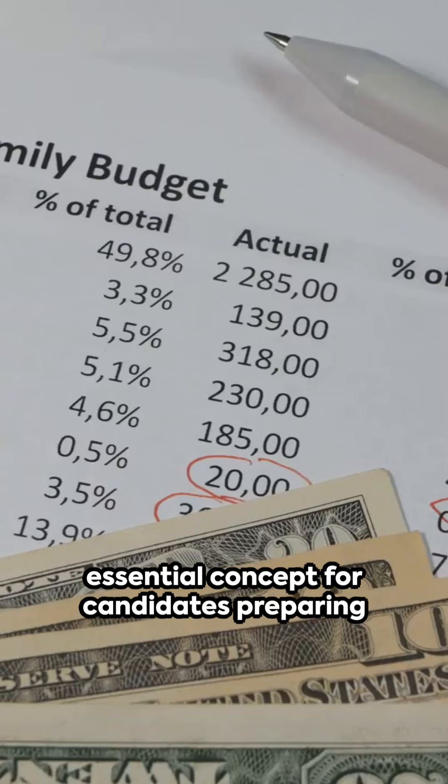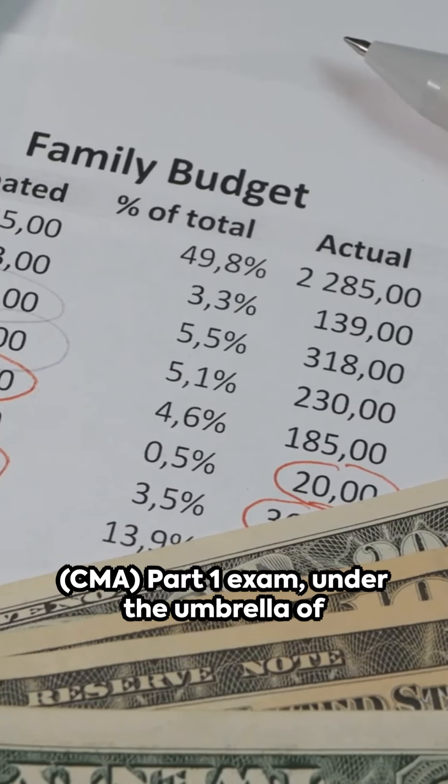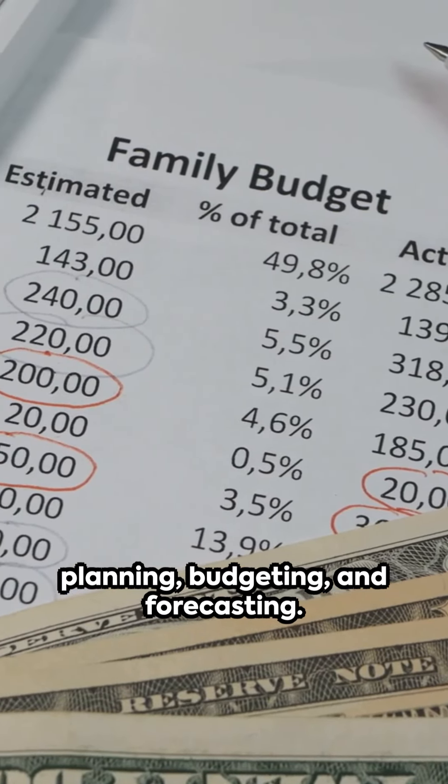Continuous rolling budgets are an essential concept for candidates preparing for the Certified Management Accountant CMA Part 1 exam, under the umbrella of planning, budgeting, and forecasting.